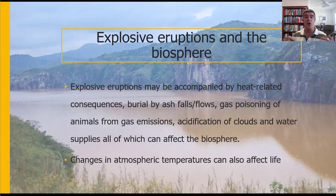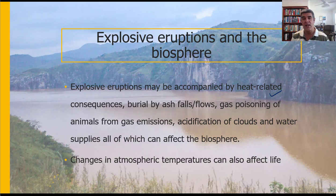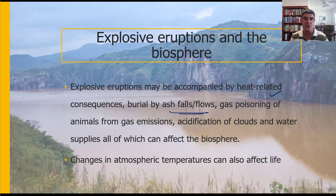When we look at explosive eruptions, we have lots of different types of potential consequences on the biosphere. We have heat-related consequences — not just hot lava flowing, but also pyroclastic material being thrown out of the volcano. There can be ash heating up the atmosphere, and the air itself can get quite hot. If there is water among the volatiles, then superheated steam can also be something that has a heat-related consequence.